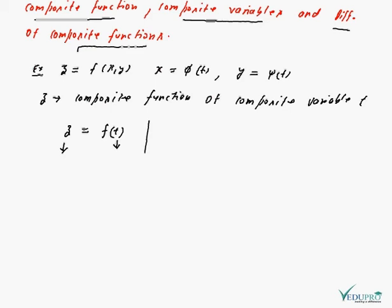In this position, we can calculate dz over dt. It will be equal to del z over del x into dx by dt, plus del z over del y into dy by dt.